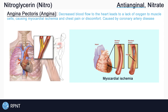One of the primary causes of myocardial ischemia and angina is coronary artery disease. When plaque builds up in the coronary arteries, which are the arteries that supply the heart with blood and oxygen, they can become narrowed and partially obstructed.